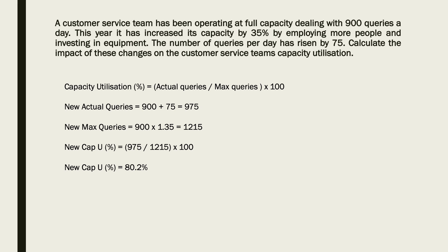So the first thing, we take the actual queries, and we need to look at the new actual queries since these changes are happening. We had in the question 900 queries a day, but since then they've increased by 75. So 900 plus 75 is, of course, 975. So we know what goes in that top bit of the formula.